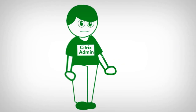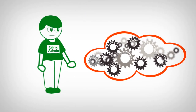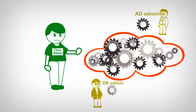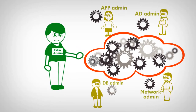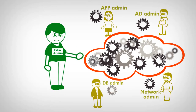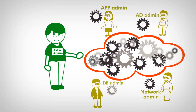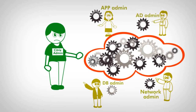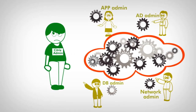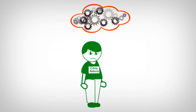Now, let's get back to our cogwheels. In most IT environments today, each cogwheel is managed by a different IT group with different admins and different monitoring tools. This means you don't have a single view of service performance and you end up with a lot of finger-pointing. And as the Citrix admin, you get blamed.